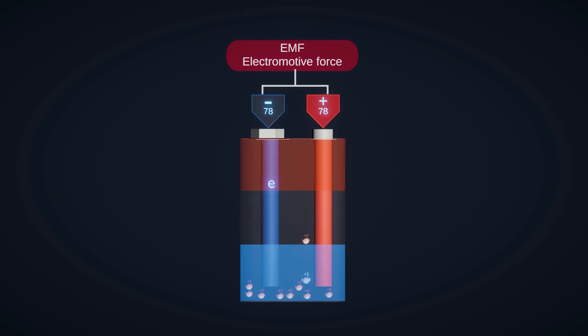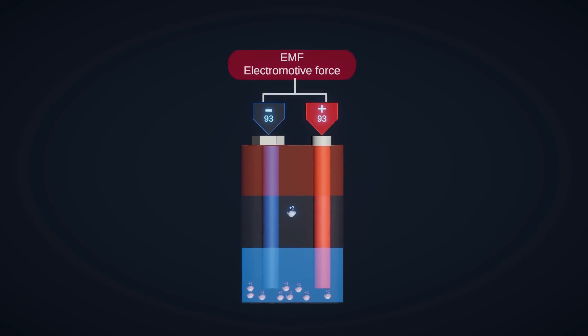This electromotive force is measured by the potential difference between the two terminals. Due to this electromotive force, electrons move from one terminal to the other.